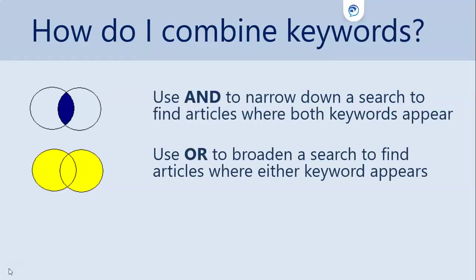You can combine your keywords to make more advanced searches using the terms AND and OR. These are often referred to as Boolean operators. AND will narrow your search, as both terms need to be present in your search results — for example, multi-agency AND safeguarding. OR will broaden your search and give you more results — for example, safeguarding OR protection, where either term could be used in the results.